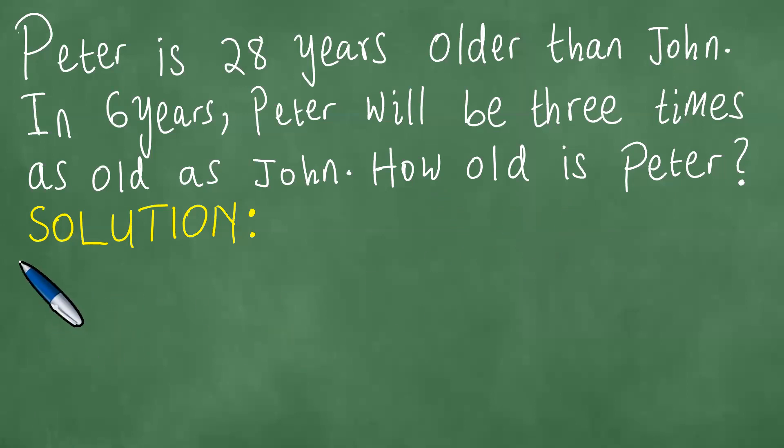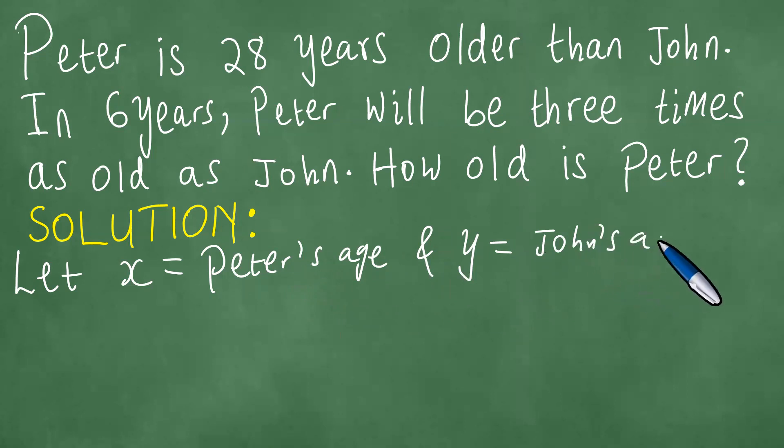To solve this problem we let x be equal to Peter's age, and y be equal to John's age.